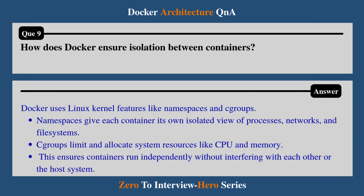Question 9: How does Docker ensure isolation between containers? Docker uses Linux kernel features like namespaces and cgroups. Namespaces give each container its own isolated view of processes, networks, and file systems. Cgroups limit and allocate system resources like CPU and memory. This ensures containers run independently without interfering with each other or the host system.